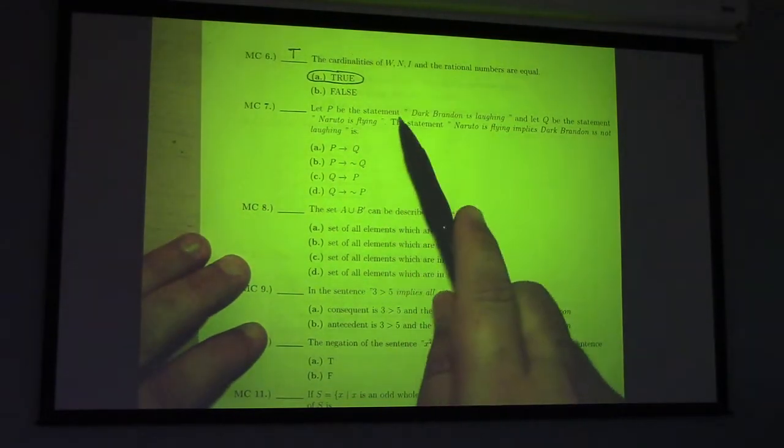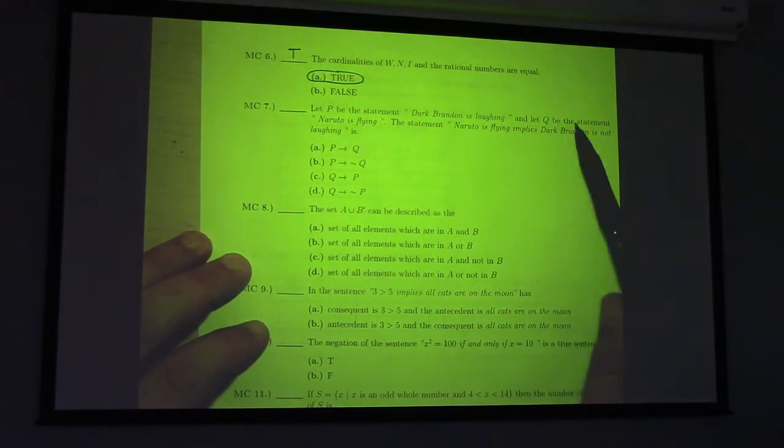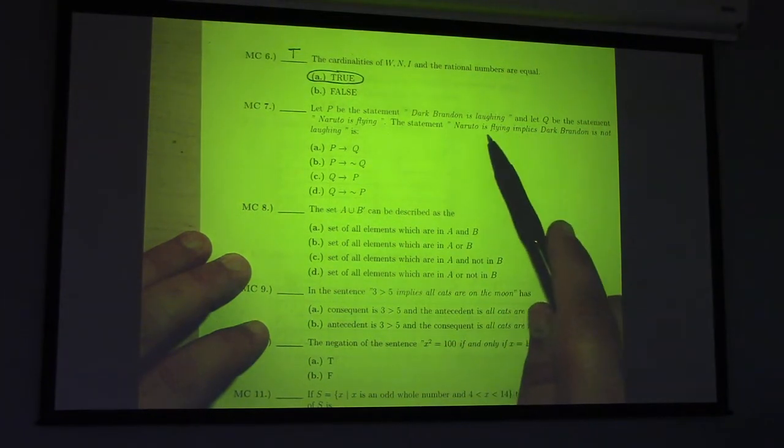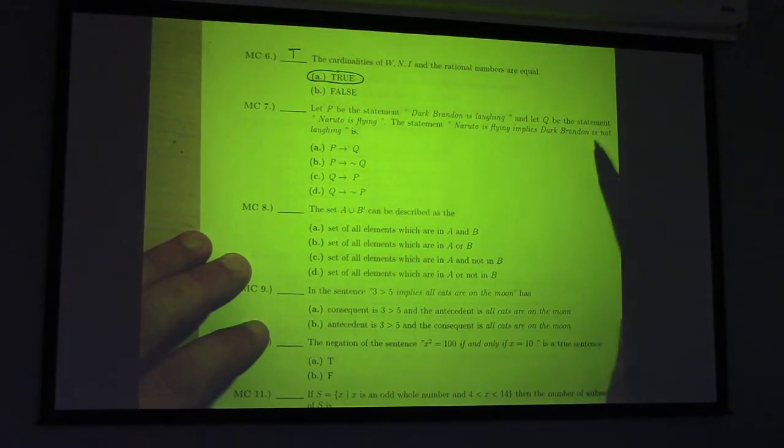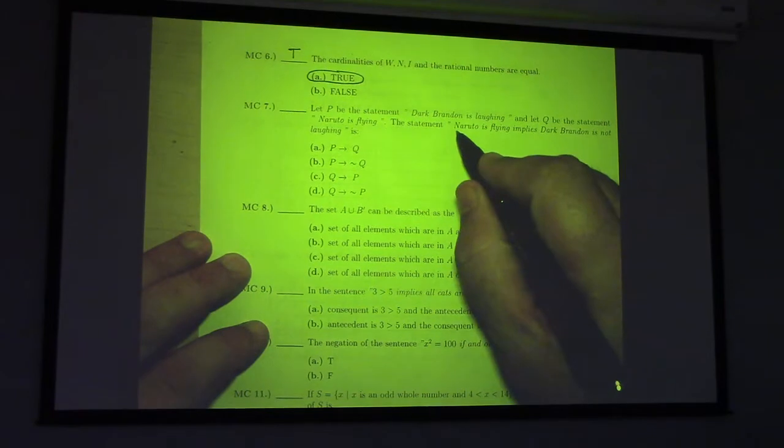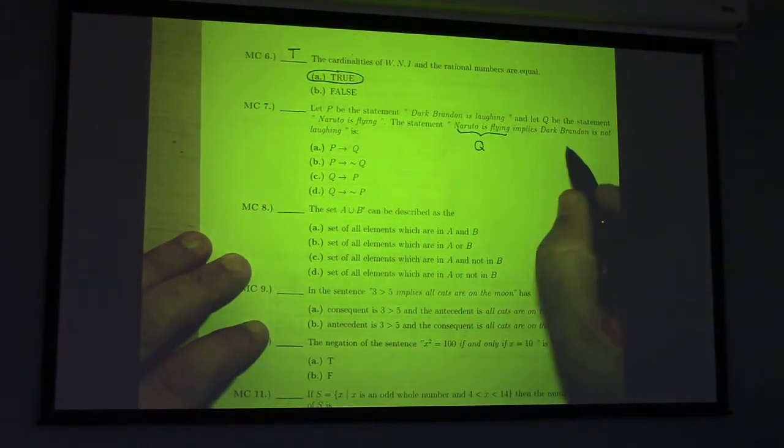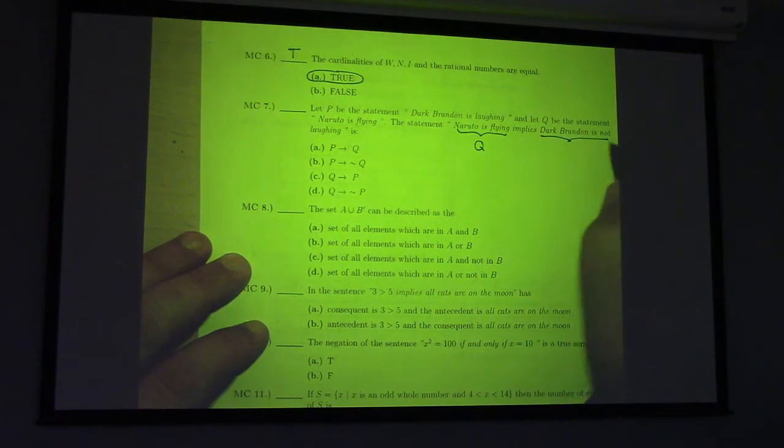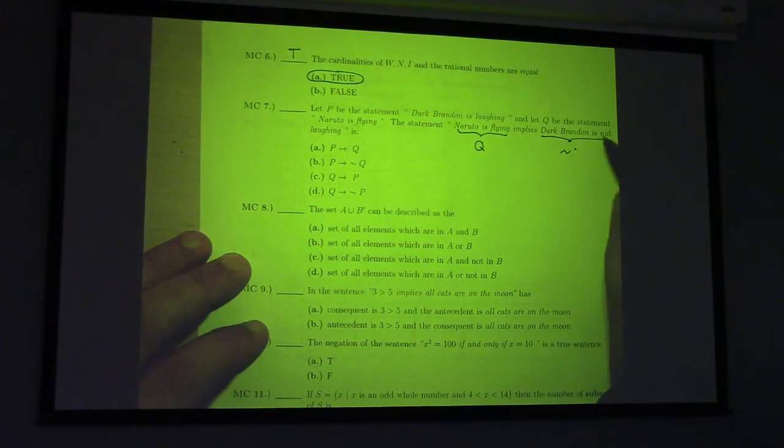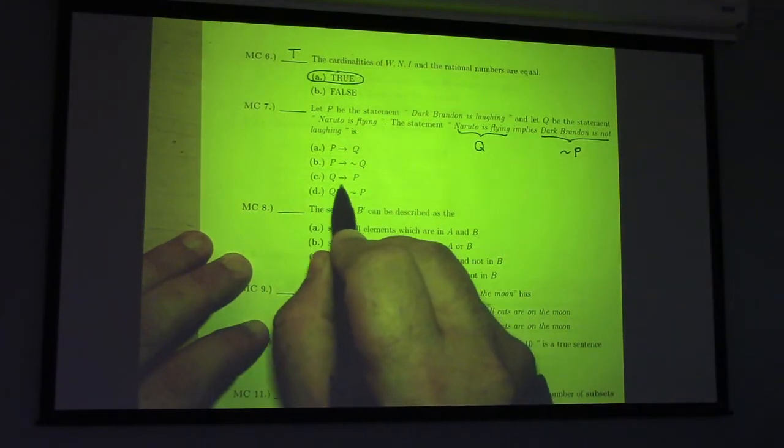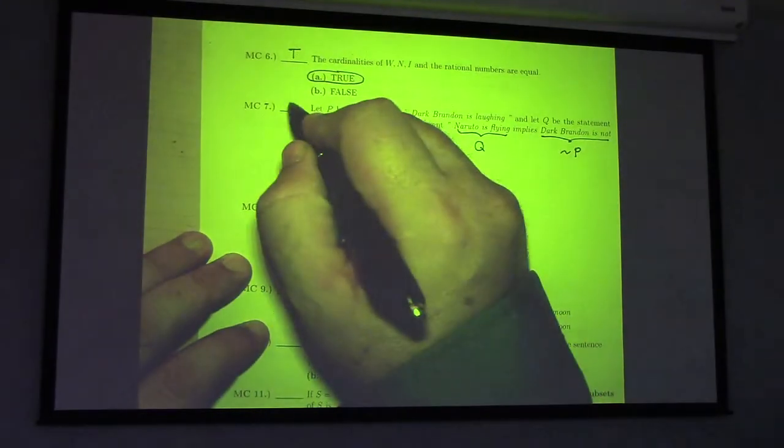Let P be the statement, Dark Brandon is laughing, and let Q be the statement, Naruto is flying. The statement, Naruto is flying, implies Dark Brandon is not laughing, so what is that? That's, Naruto is flying, we said, is Q. And Dark Brandon is not laughing would be not P. So, what do we got?